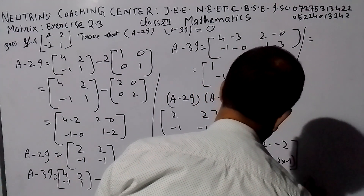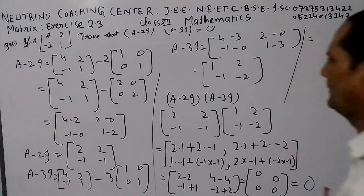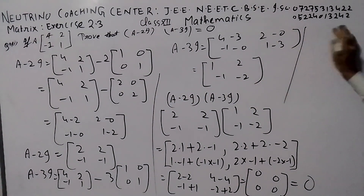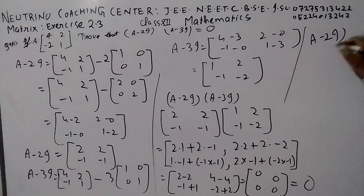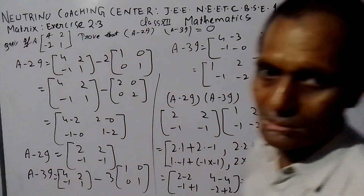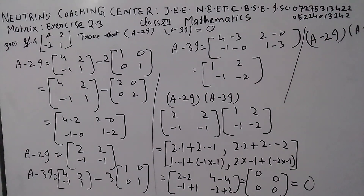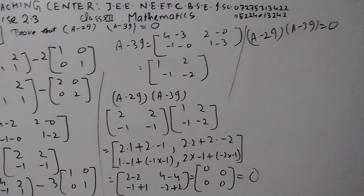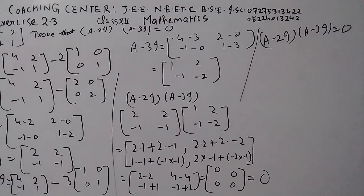This is the zero matrix. This step — A minus 2I into A minus 3I — gives value 0, 0, 0, 0. This will be a proof. This is why you have to prove it. So let's try it. Now let's try it.